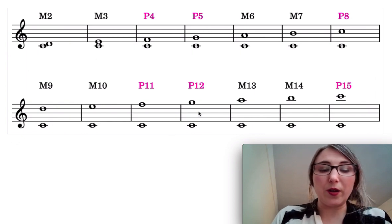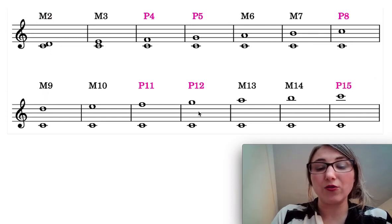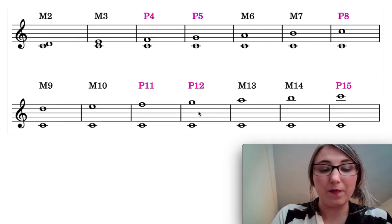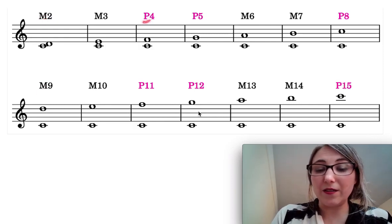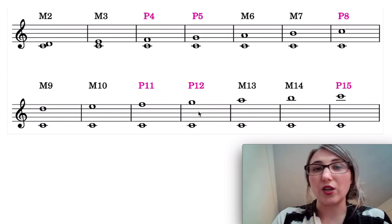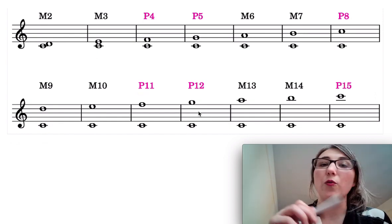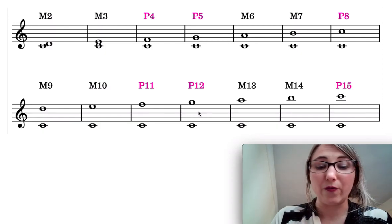So one thing you notice between each of the compounds and the simple variants, if I reduce them out, is that the qualities are all the same. So if it's a major interval, when it's a simple interval it's major when it's compound. If it's perfect then the compound version is also going to be perfect and this also applies to diminished and augmented intervals. The quality is always going to be exactly the same. So when you reduce it you look at the quality and that's what determines it for the compound interval.